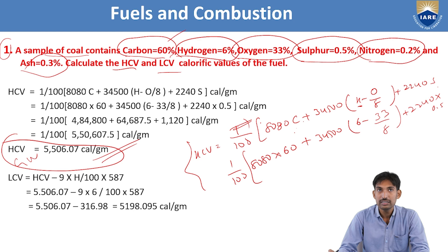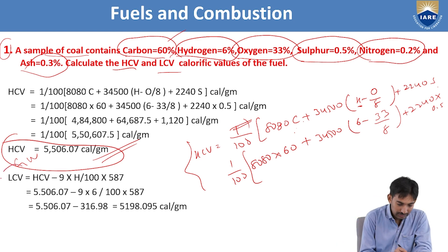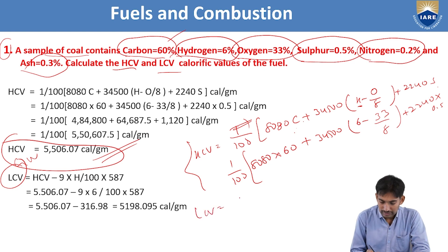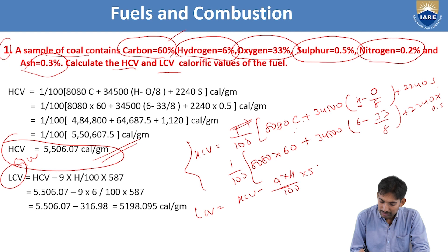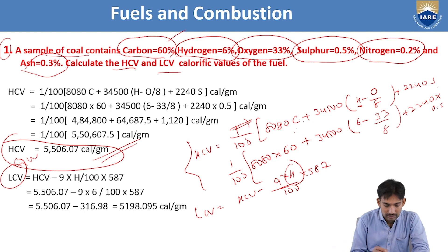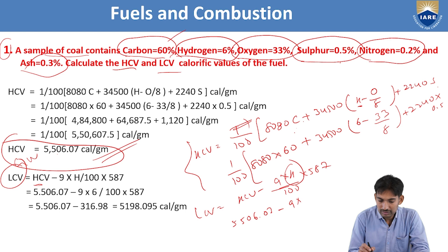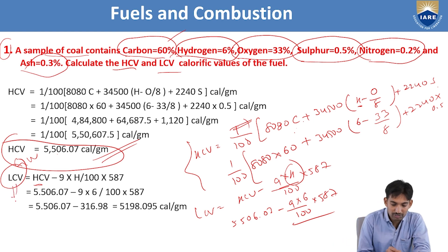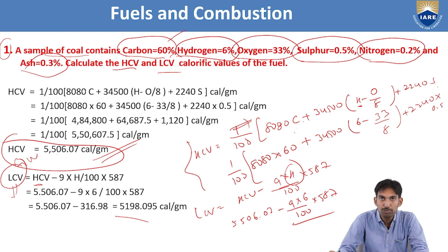Next, calculate the LCV for Problem 1. LCV = GCV − (9 × H/100) × 587 = 5506.07 − (9 × 6/100) × 587. Solving this equation, the lower calorific value of the fuel is 5198.095 calorie per gram. This is how you calculate HCV and LCV using DeLang's formula.